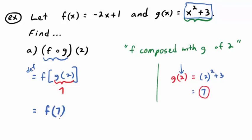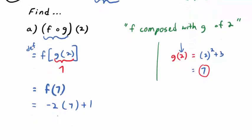Now you're in familiar territory. What's f of 7? Find the formula for f and replace x with 7 — that's what that notation means. So negative 2 times 7 plus 1. I replaced this x with the 7. So that's going to be negative 14 plus 1, which is negative 13.